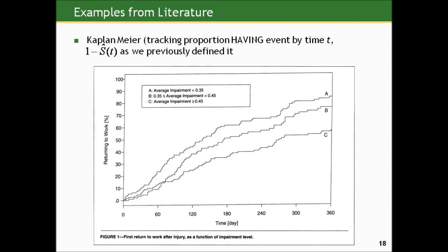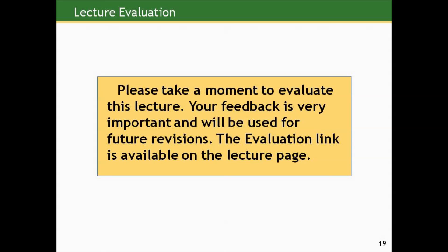Hopefully at the end of this, you have a flavor for how we can summarize this type of data — how we exploit as much information as we can from those who are censored while still recognizing that they're not a full piece of information — and for the fact that this is a multi-dimensional estimator that tracks proportions over the dimension of time. All we've done here is scratch the surface. I wanted to introduce this type of data and some of the difficulties in dealing with it while we're discussing data types and appropriate methods this quarter.